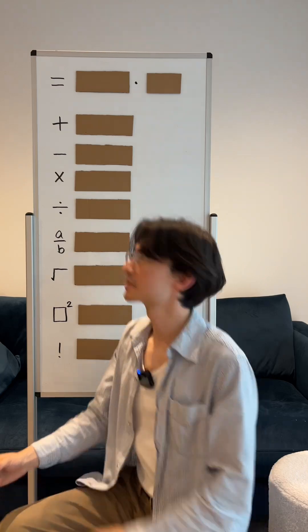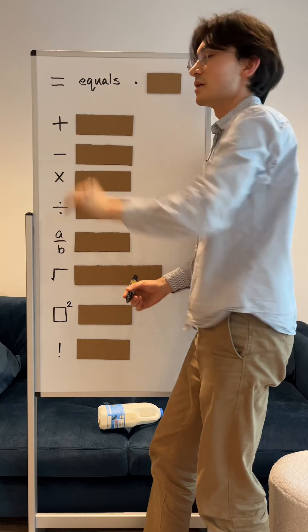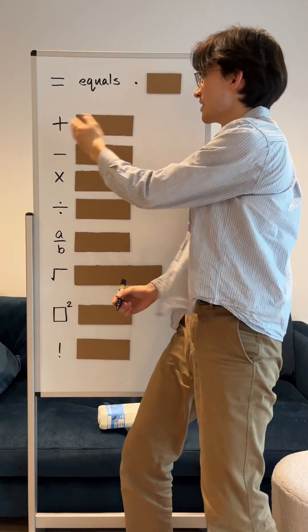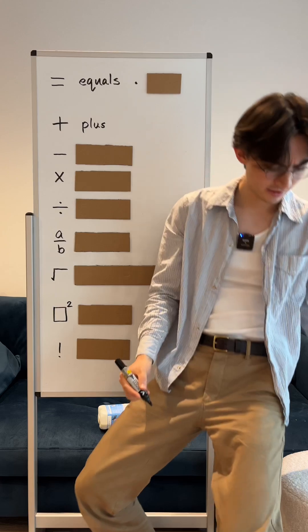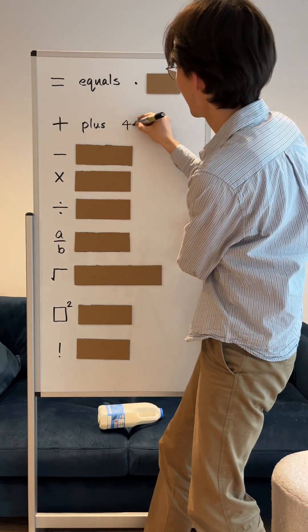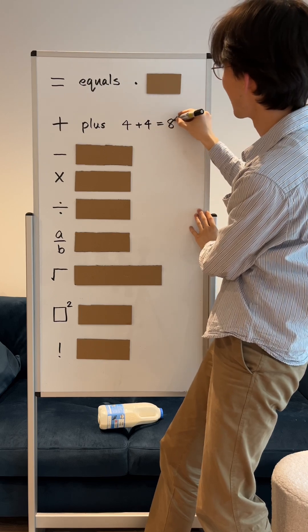How to read maths in English. This equals. This plus. So 4 plus 4 equals 8.